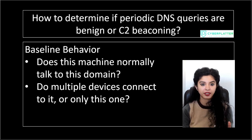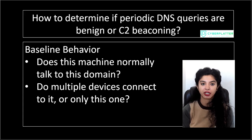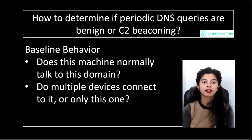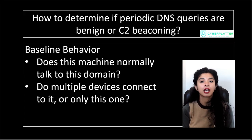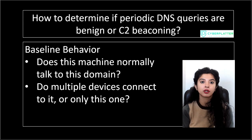To summarize: to determine if periodic DNS queries are benign or C2 beaconing, you look at the timing, domain reputation, originating process, query patterns, follow-up network traffic, and host indicators. Benign traffic is irregular and tied to known software. C2 traffic usually shows consistent timing, unknown domains, encoded subdomains, and follow-up connections to suspicious IP addresses.